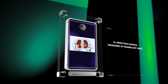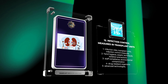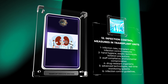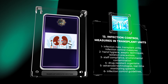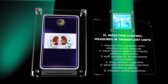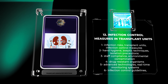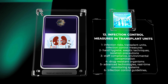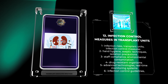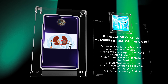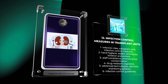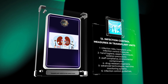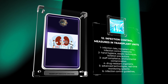To effectively minimize infection risks in transplant units, implementing infection control measures is crucial. This includes proper hand hygiene, aseptic techniques, and isolation precautions. Challenges include staff compliance, environmental contamination, and the rise of drug-resistant organisms. Future directions involve utilizing advanced technologies like real-time monitoring systems and creating specific infection control guidelines for transplant units.